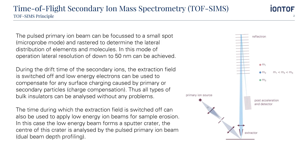The pulsed primary ion beam can be focused to a small spot — microprobe mode — and rastered to determine the lateral distribution of elements and molecules. In this mode of operation, lateral resolutions of down to 50 nm can be achieved.